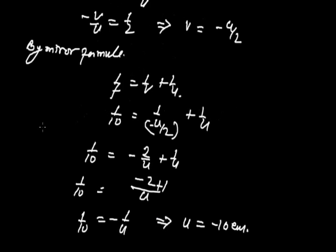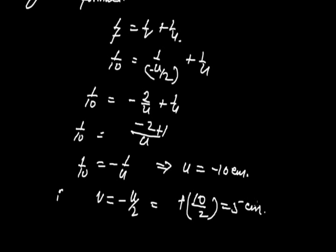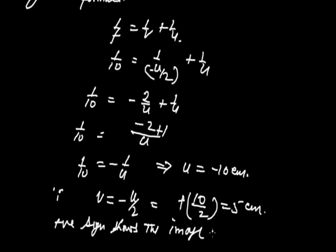We can find V since V equals minus U/2. That gives minus (minus 10)/2 equals plus 5 cm. The positive sign in V shows that the image is virtual and is formed behind the mirror.